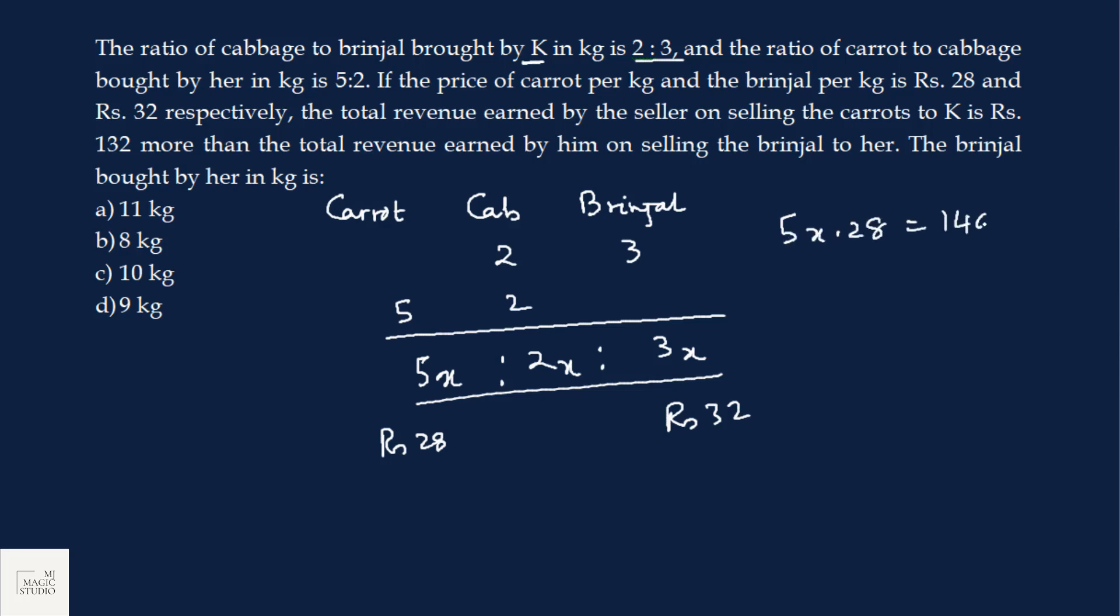The total revenue earned by the seller on selling the carrots. So suppose the common ratio is X. Then these weights are purchased. So revenue earned by selling the carrots is 5x into 28, that is 140x. This is Rs. 132 more than the total revenue earned by him on selling the brinjal. On selling the brinjal, 3 into 32 is 96x. So this is the equation we have. 140x equals 132 plus 96x. 140 minus 96 is 44. X is 132 divided by 44, that is 3.